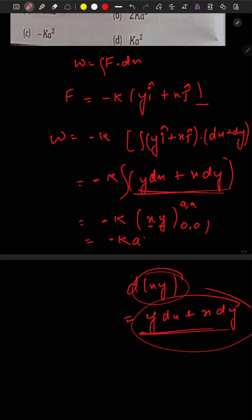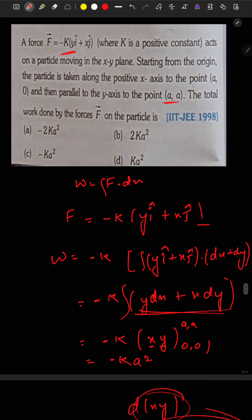This will be minus K times a squared, which is option number C, your answer.